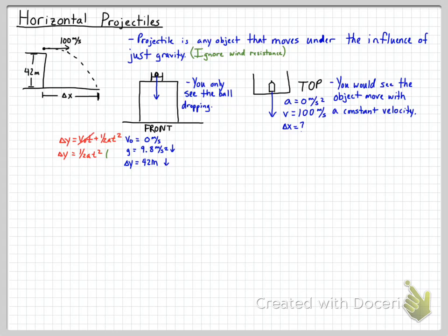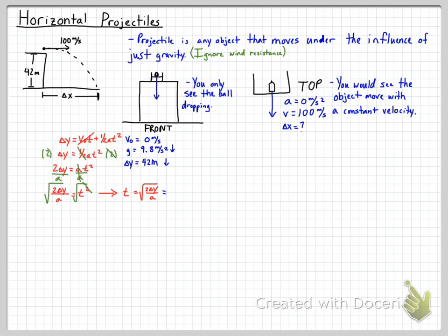To isolate t, we multiply both sides by 2 to cancel the fraction, giving 2Δy = at². Then divide both sides by a, giving 2Δy/a = t². Finally, take the square root of both sides so that t = √(2Δy/a). Plugging in our numbers: t = √(2 × 42 / 9.8), which comes out to 2.9 seconds. Note: in class we'll use 10 m/s² instead of 9.8, but this shows how it works.